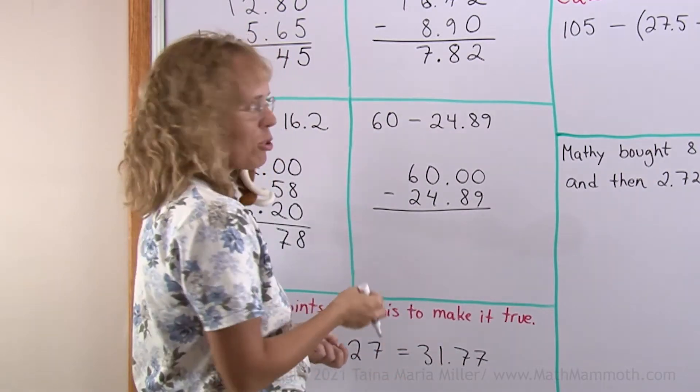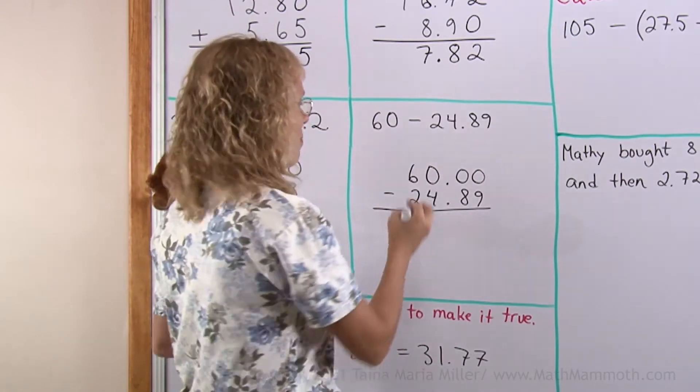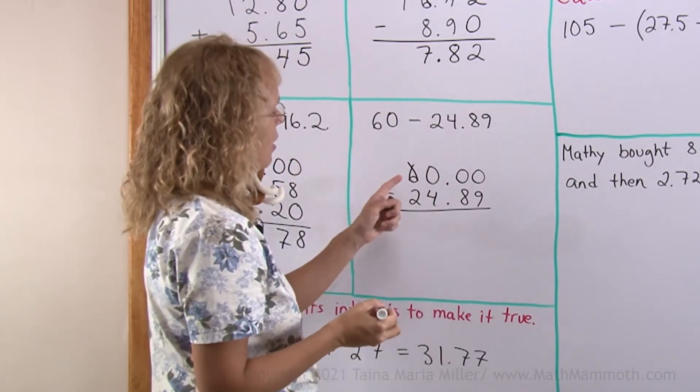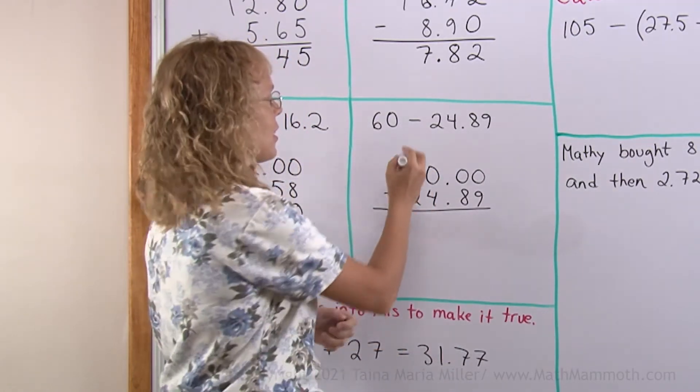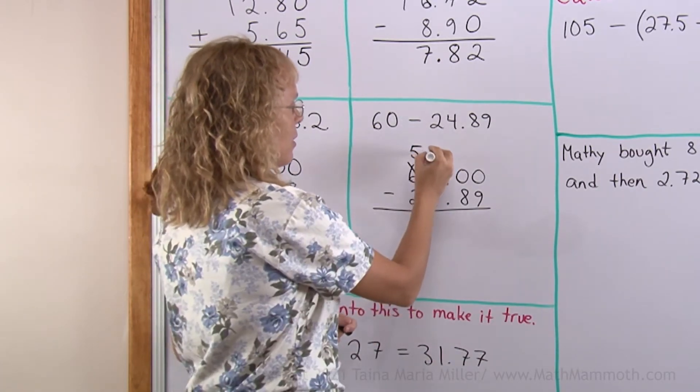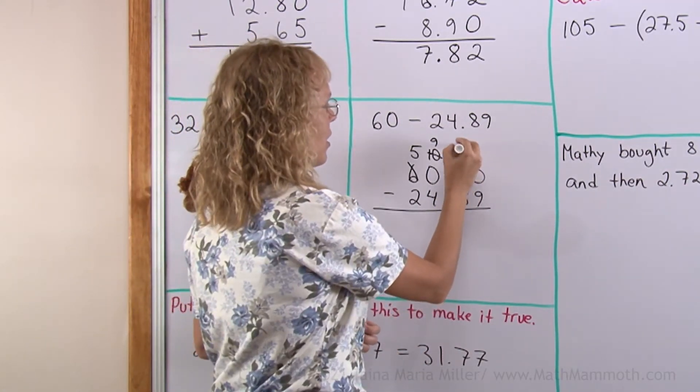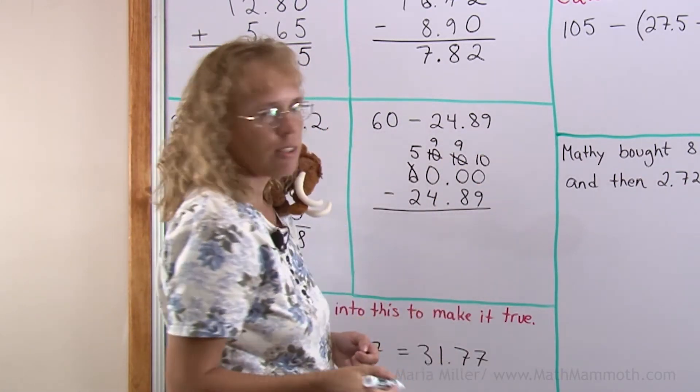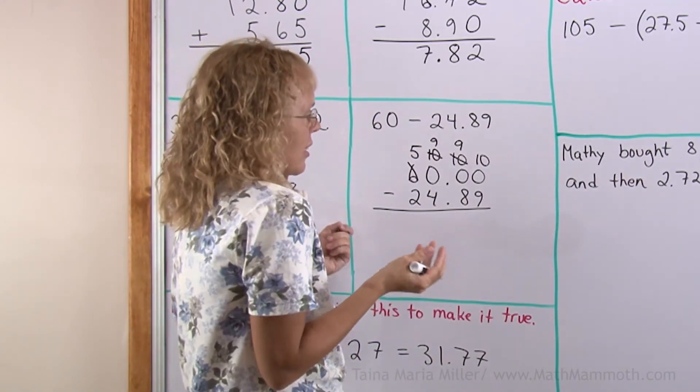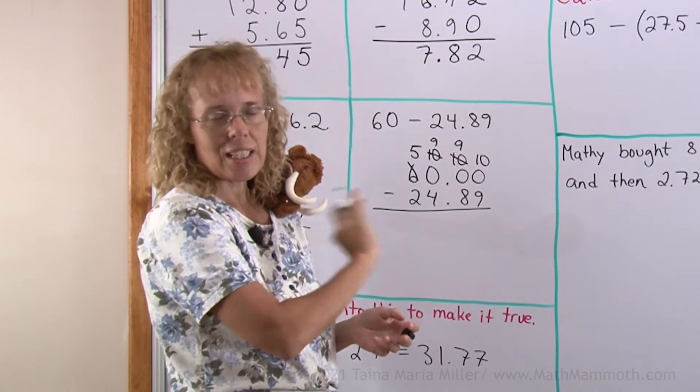Now this is one of those borrowing or regrouping problems where you cannot subtract anything until you regroup or borrow. I take one, ten, leaving five here and ten here. From ten I take one, it becomes ten tenths here. Then again I take a tenth and it becomes ten hundredths here. Just as if you didn't have any decimal points. The borrowing or regrouping works exactly the same way.